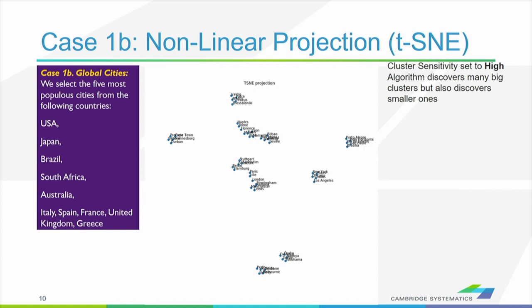What I'm going to do now is change a parameter in the high-dimensional visualization: I'll set cluster sensitivity to high. This way, I'm still able to identify the clusters at the high level — the big countries — but Europe has been split into actually three different clusters: Greece at the top, then the South of Europe which is Italy, France, and Spain, and then Northern Europe which includes the United Kingdom. By changing different parameters in the high-dimensional visualization, you can uncover structure at different scales, and that is what is so appealing with this non-linear visualization technique.